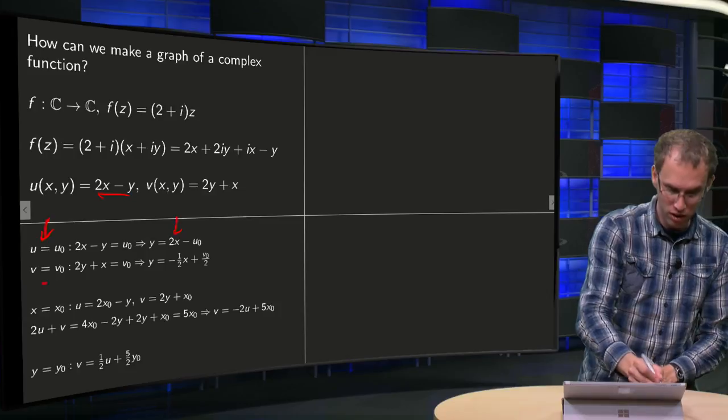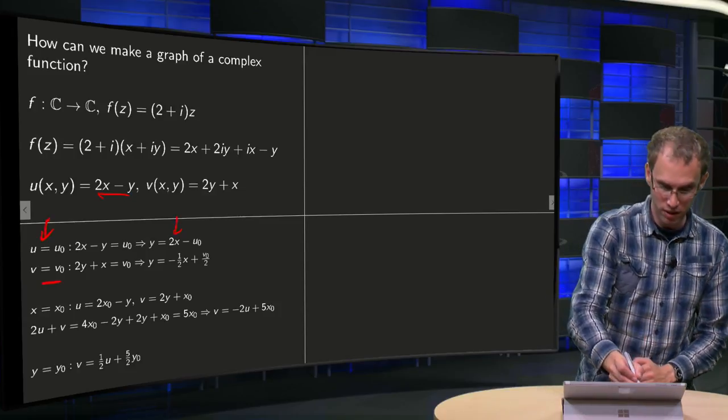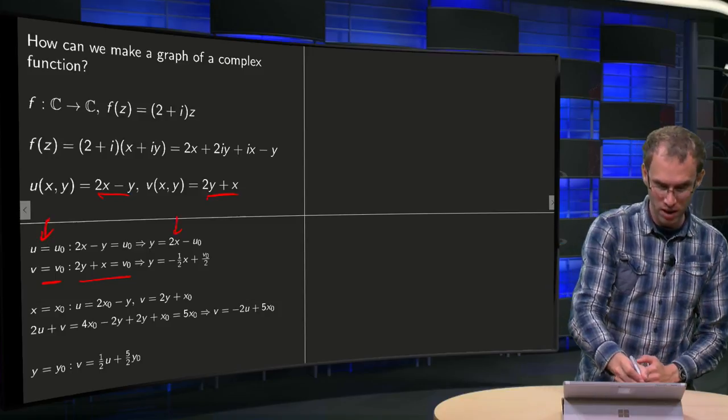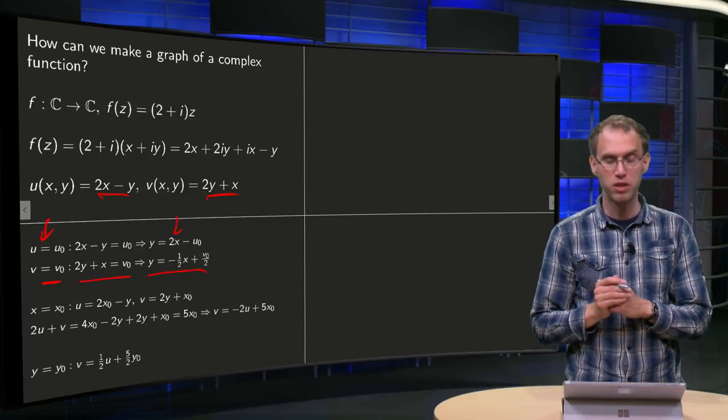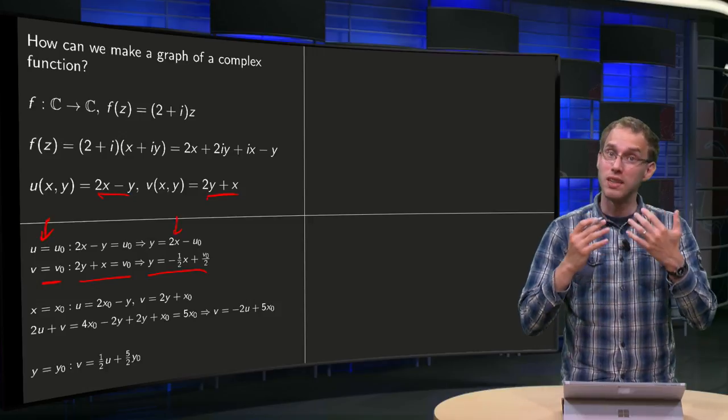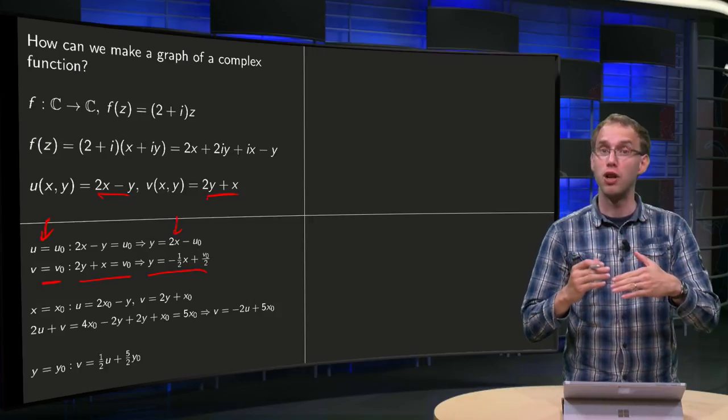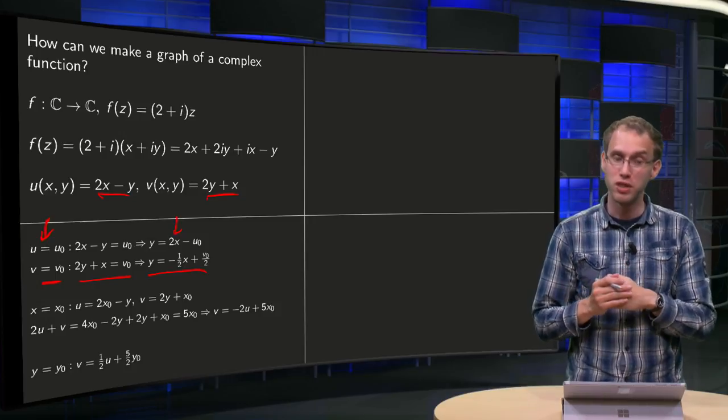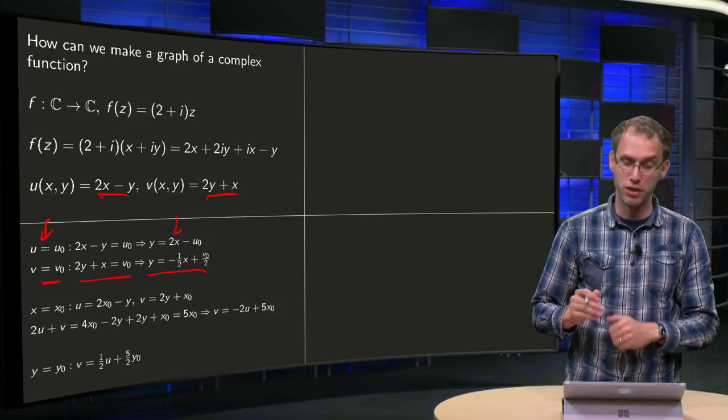If we set v to v₀, v to a constant, we get v equals constant, we can again solve for y, so we get y equals minus 1 half x plus v₀ over 2. So we get lines as well, but now with slope of minus 1 half, and with the intersection of the y axis at v₀ over 2.